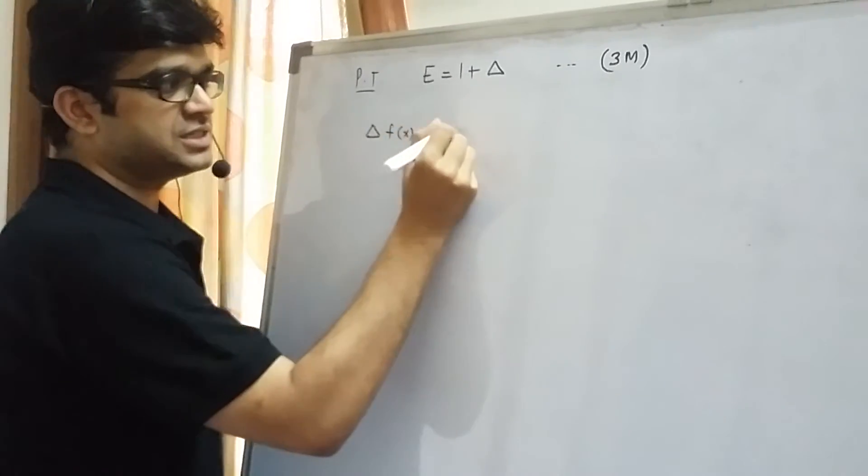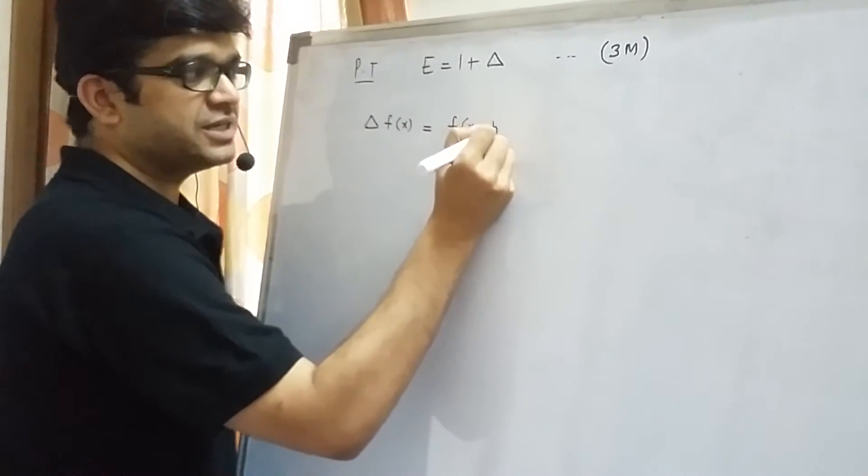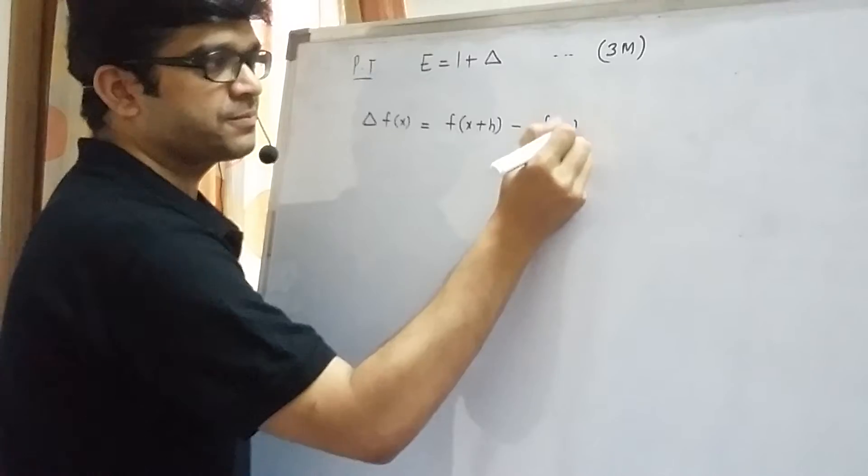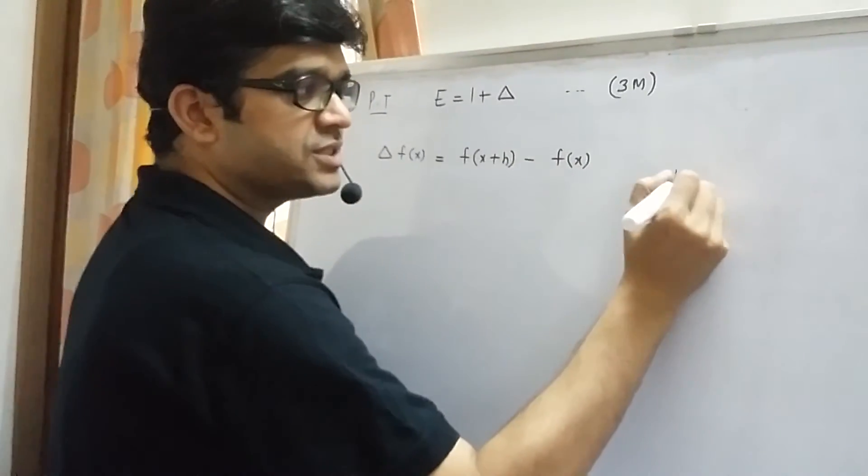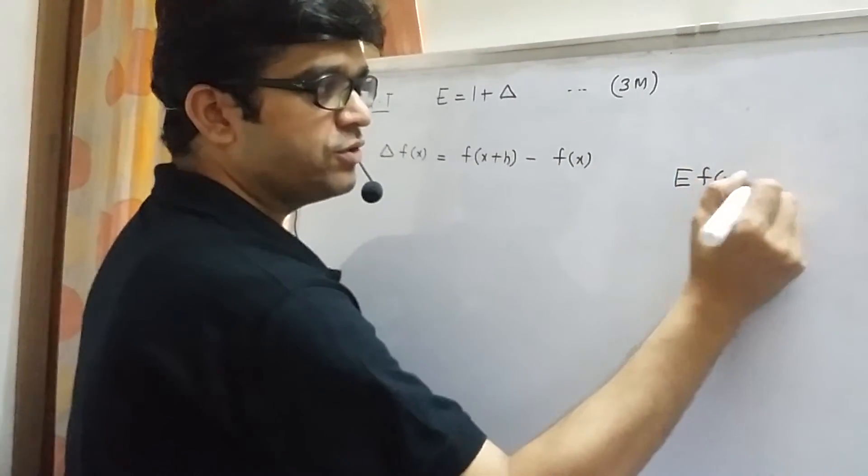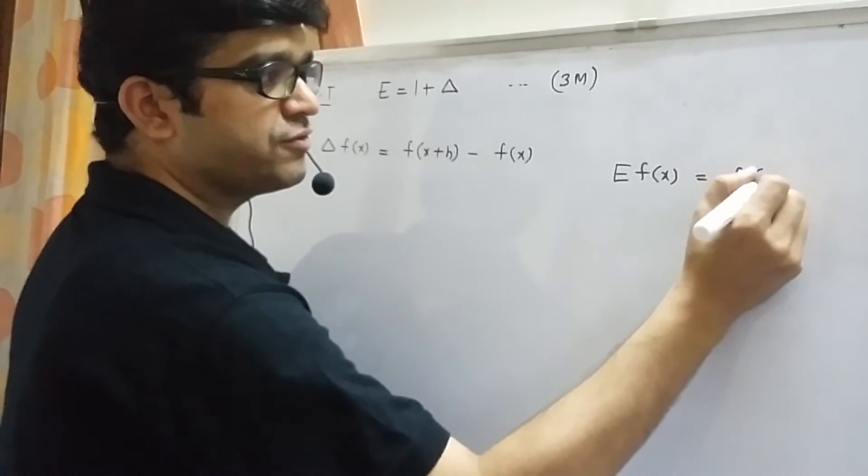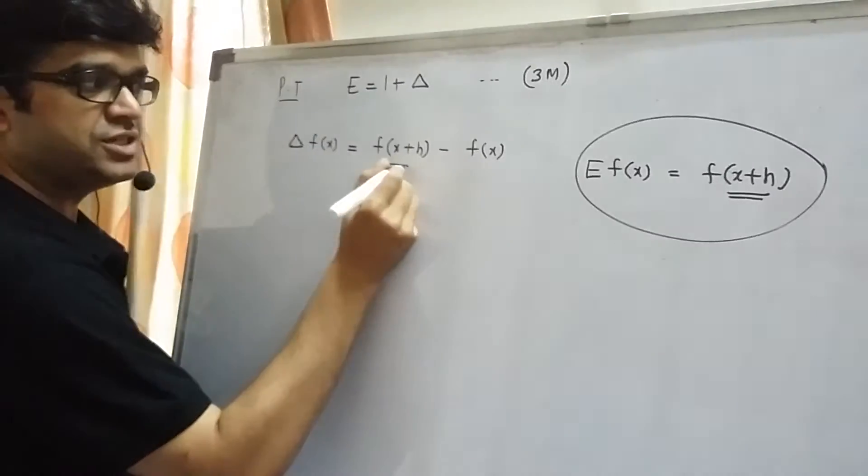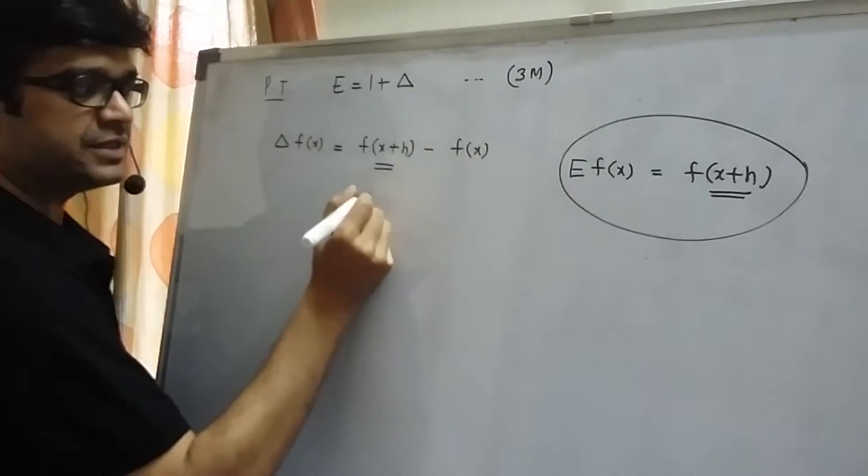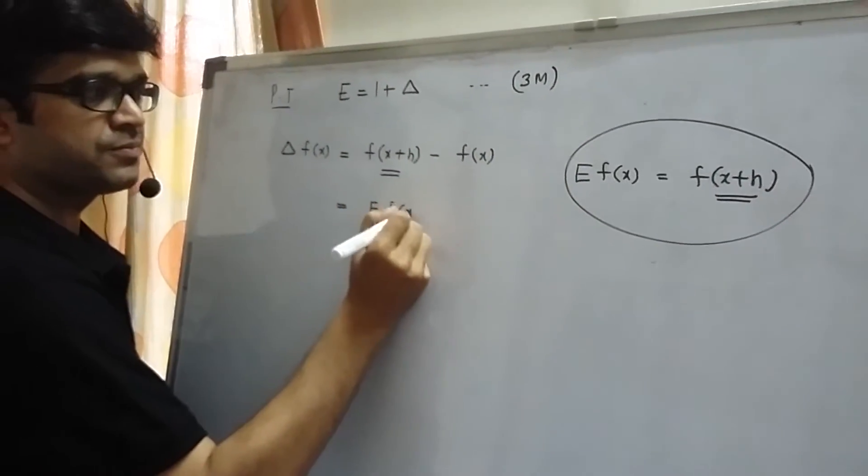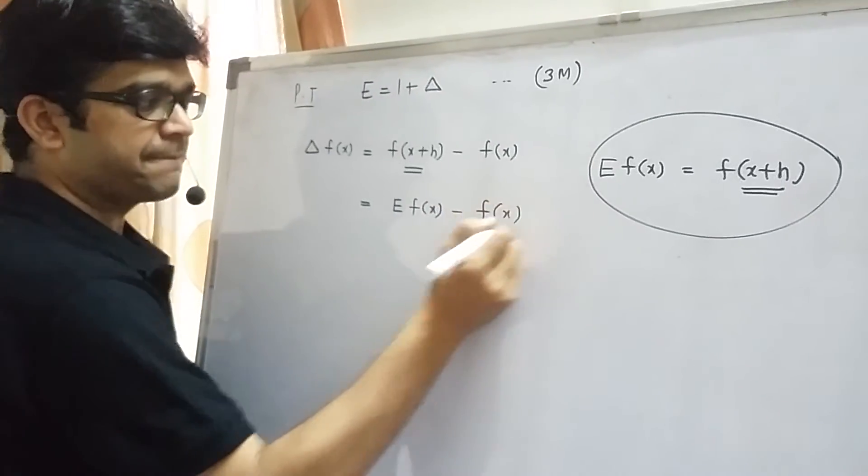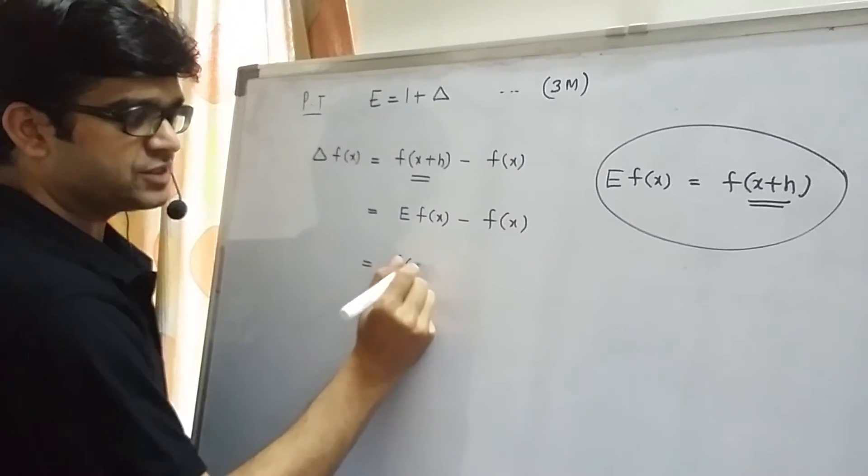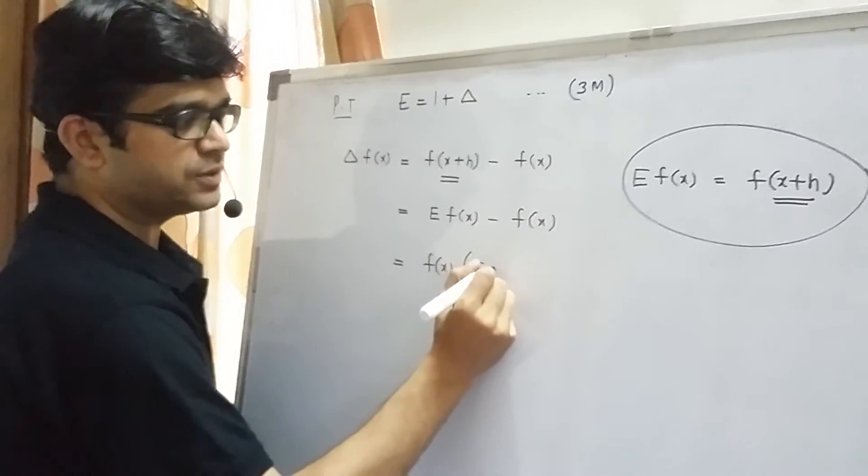We know delta f(x). What it is? It is f of x plus h minus f of x. And remember what was E of f(x). E of f(x) was f of x plus h. So this f of x plus h here is replaced by E of f(x). So this is what I get. Now f(x) is common. We get E minus 1 in the bracket.